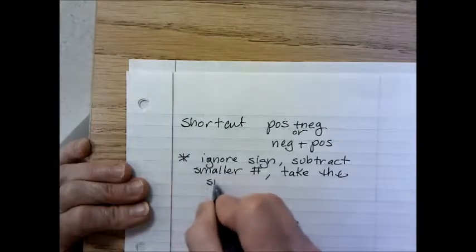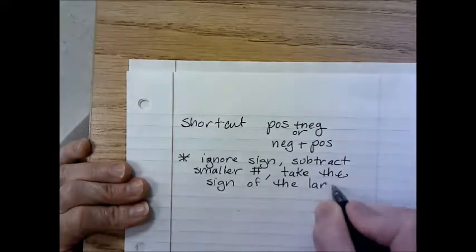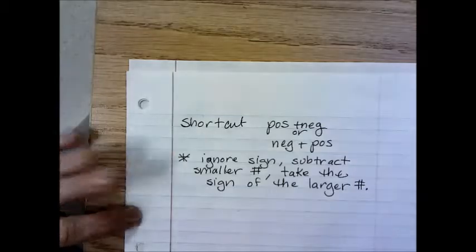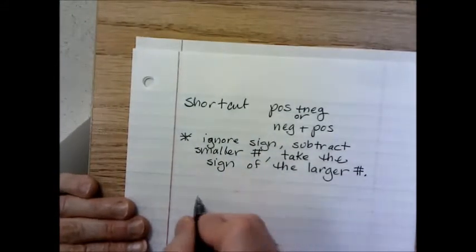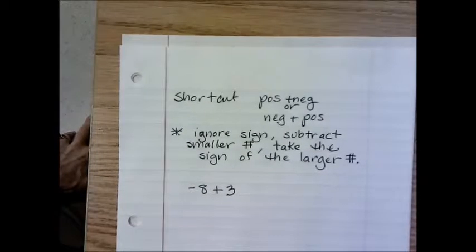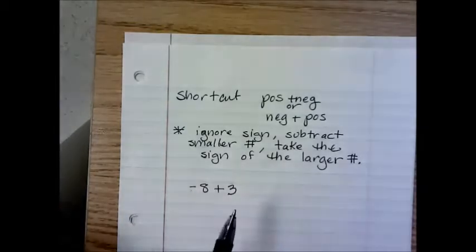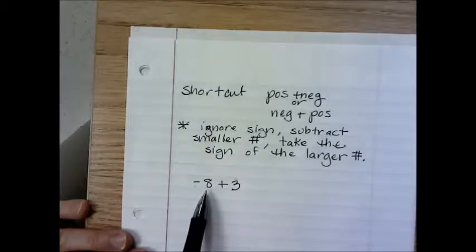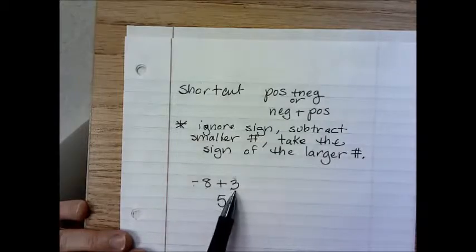There is a shortcut for positive plus a negative, or negative plus a positive — the order won't matter. First, ignore the signs, whether they're positive or negative. Then subtract the smaller number from the larger number. Finally, take the sign of the larger number for your answer.